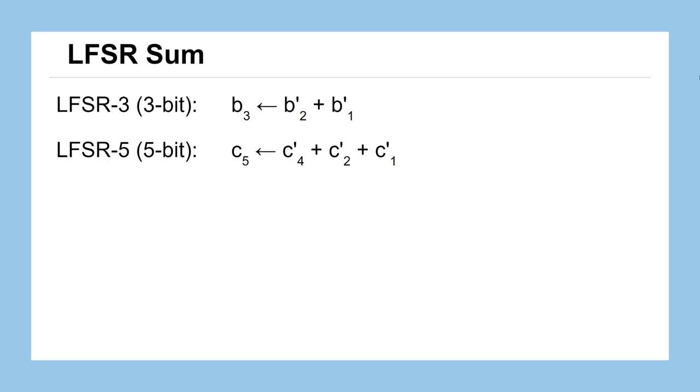Our 3-bit system will be obtained by taking the previous bit 1 and bit 2, denoted by b1 and b2, added together mod 2 to determine the new value for bit 3. For our 5-bit LFSR system, we'll use the letter c instead of b, and the definition will be that we'll take the previous bits 1, 2, and 4, add them together and mod by 2 to determine the new value for bit 5.